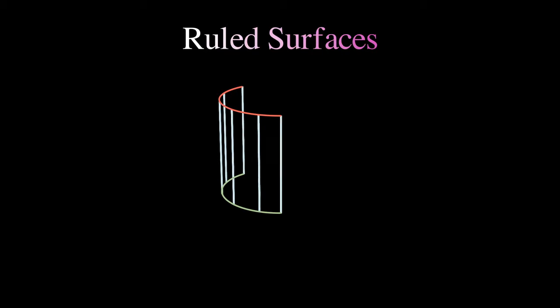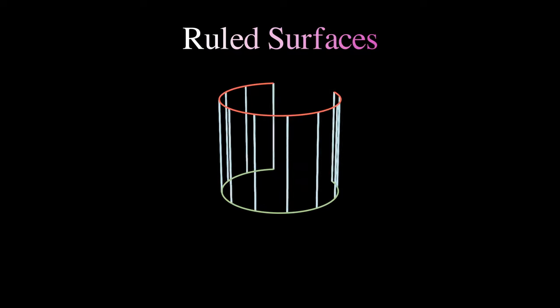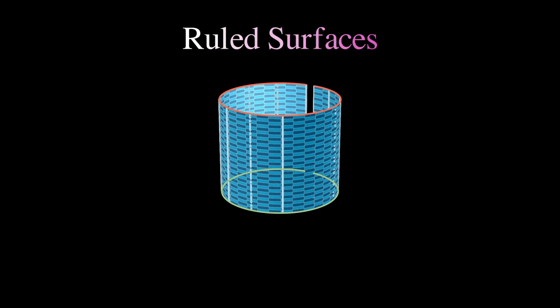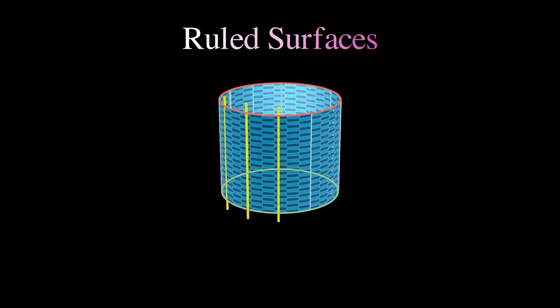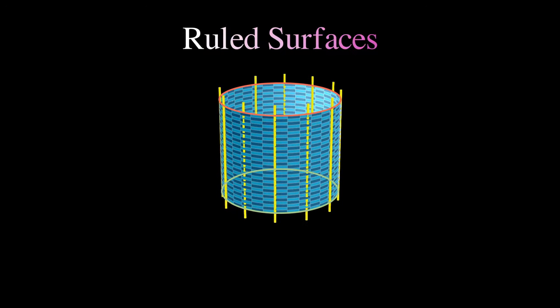One of the easiest examples of which is a cylinder. If we just take a vertical line and we wave it around in a circle on the ground, we trace out a cylinder. The vertical lines that lay on the surface of the cylinder are called its rulings.